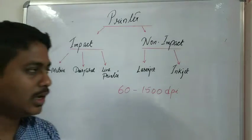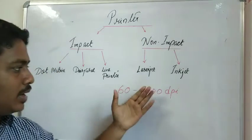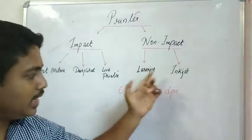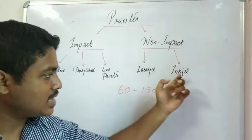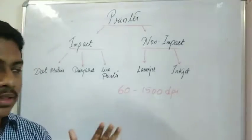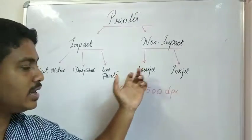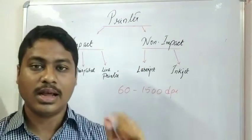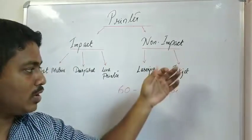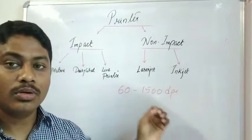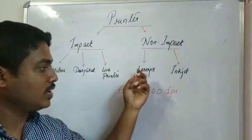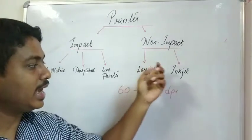Non-impact printers include the laser jet and the inkjet. Both are very fast. The laser jet printer uses laser technology to print on a page, while the inkjet printer uses ink to print on a page — that is the difference between laser jet and inkjet.